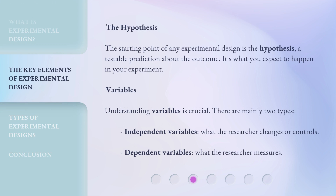The Hypothesis. The starting point of any experimental design is the hypothesis — a testable prediction about the outcome. It's what you expect to happen in your experiment. Variables. Understanding variables is crucial. There are mainly two types: independent variables, what the researcher changes or controls, and dependent variables, what the researcher measures.